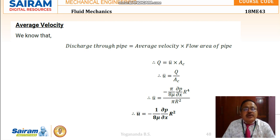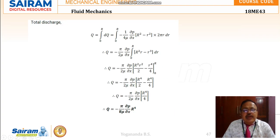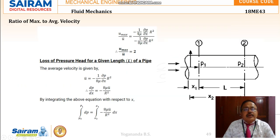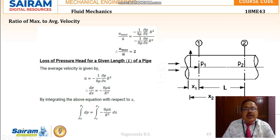For average velocity, we know Q = flow area · u_bar, so u_bar = Q / (π R²). Using the derived Q equation and dividing by the pipe area pi R squared, we obtain the average velocity. It is then proved that u_max = 2 · u_bar.